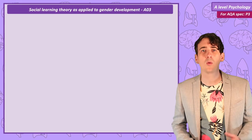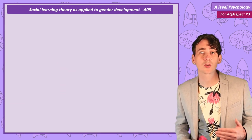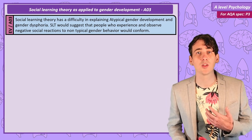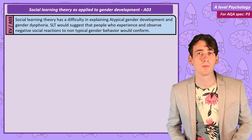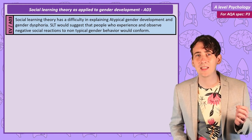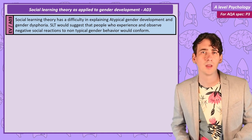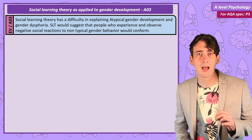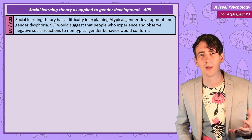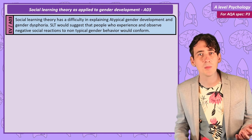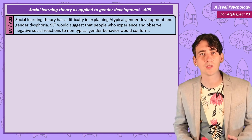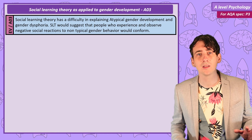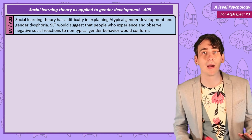One significant criticism of social learning theory is when we try to apply it to atypical gender development. Many people experience their gender identity as not matching the sex they were assigned in infancy, and society's response can result in significant distress leading to gender dysphoria. Since social pressures punish people who don't conform to gender-normative behaviours and constantly show gender-normative behaviour as rewarding, social learning theory struggles to explain why people would continue to show cross-sex gendered behaviour. The fact that people do go on to display atypical gender development despite social pressure might be better explained by a biological explanation of gender.